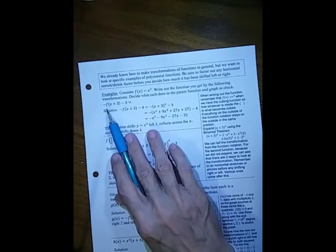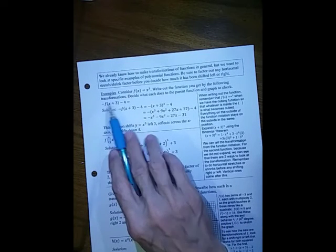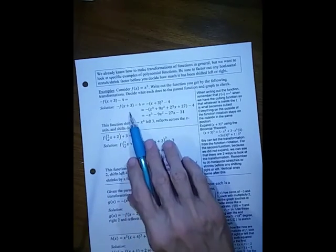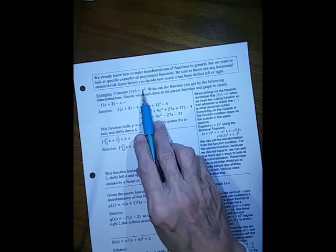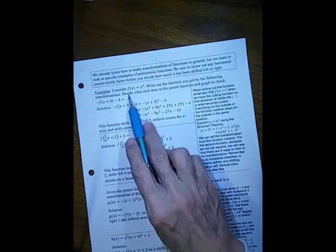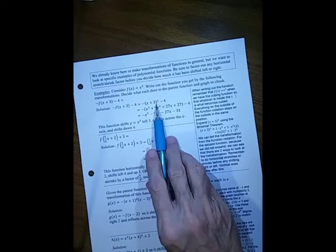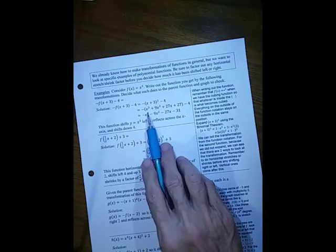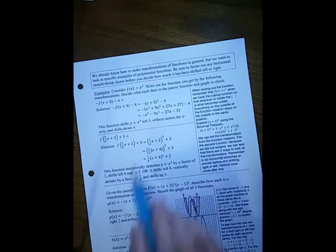So if I want minus f of x plus 3 minus 4, I know that this shifts it left 3, reflects across the x-axis, and goes down 4. But what would that function be? Well, x plus 3 means I put x plus 3 in this function. And then I'm putting a minus on the outside and subtracting 4. So that's a minus on the outside of that cubing, minus 4. Using the binomial theorem would give me this. And then I take the opposite of that and subtract 4 to get this polynomial.